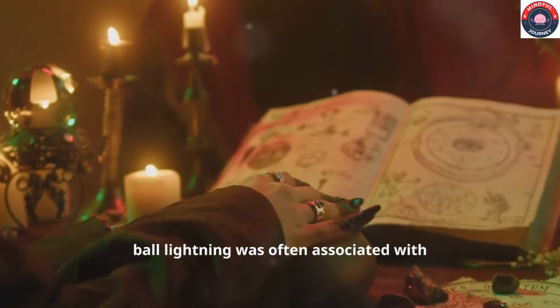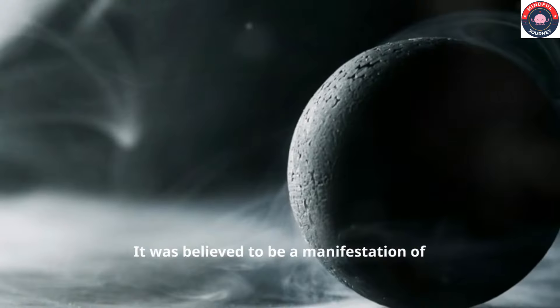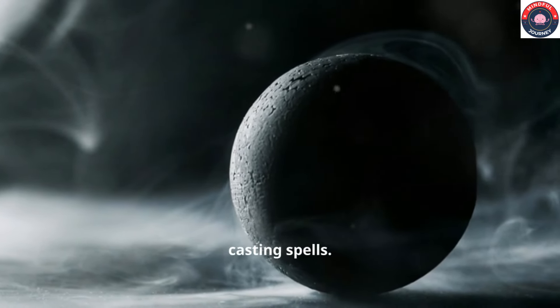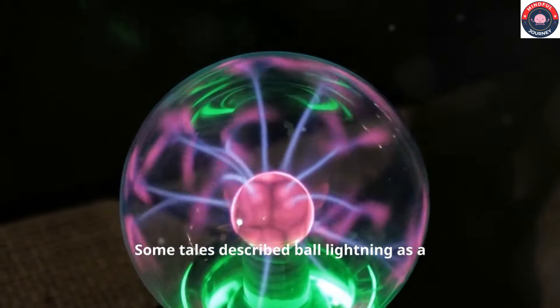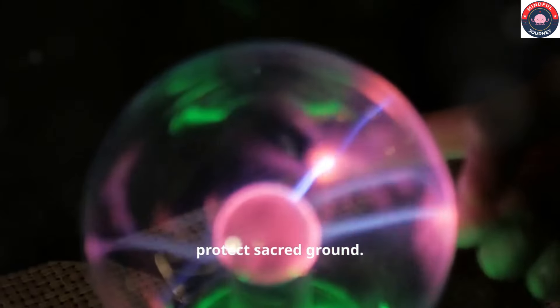In European folklore, ball lightning was often associated with witchcraft and sorcery. It was believed to be a manifestation of evil spirits, or the work of witches casting spells. Some tales described ball lightning as a fiery orb sent to punish sinners or protect sacred ground.